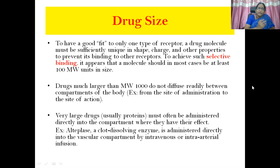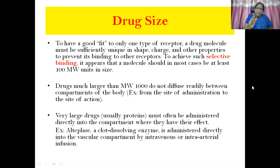Then comes drug shape. To have a good fit to only one type of particular receptor, a drug molecule must be sufficiently unique in shape, charge, and other properties to prevent binding to other receptors — that is what is known as selective binding. The drug shape is complementary to that of the receptor site in the same way that a key is complementary to a lock. The receptor and the drug molecule should be complementary like that of a key to a lock; only then does the drug fit into the binding site of the receptor. To interact chemically with its receptor, a drug molecule must have appropriate size, shape, electrical charge, and atomic composition. For example, a pill given orally to relieve a headache is administered at a location distant from its intended site of action. Very large drugs like proteins must often be administered directly into the compartment where they have their effect — for example, alteplase, a clot-dissolving enzyme, is administered directly into the vascular compartment by intravenous or intra-arterial infusion.